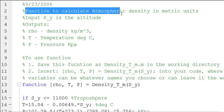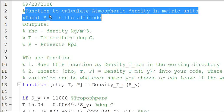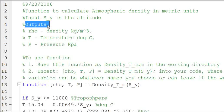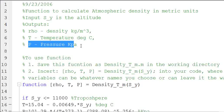I'm going to write the reason for the function. So this one is a function to calculate the atmospheric density in metric units. The input, what the input variable is, is S_y, and the outputs are rho as density in kilograms per meter cubed, temperature, and pressure, and units of both of those are there as well.